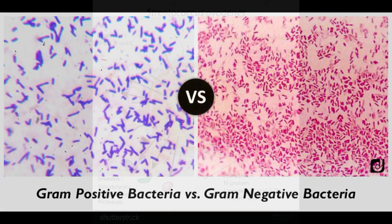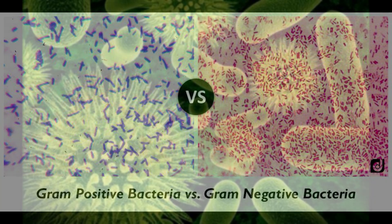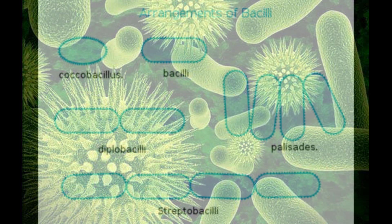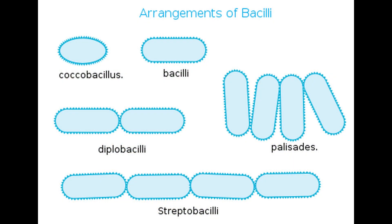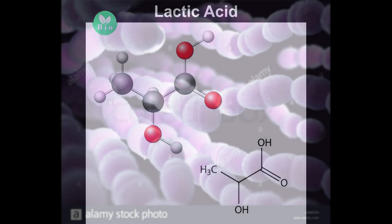The phylogeny of the bacteria includes being a member of the sub-kingdom Posibacteria, which includes gram-positive bacteria; the phylum Firmicutes, which is the most abundant bacterial phylum in humans; class Bacilli, which are all cylindrical bacterium; and order Lactobacillales, which comprises bacteria whose primary end product of carbohydrate metabolism is lactic acid.